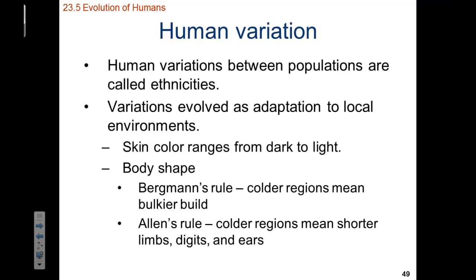Within Homo sapiens there is a lot of variation. These variations between populations are called ethnic groups or ethnicities, and these variations are adaptations to local environments — including changes in skin color and body structure. Bergmann's rule is a general trend observed within mammals: individuals that live in cold regions have bulkier builds to better conserve heat, while individuals in warmer regions have more slender builds to better cool their bodies. Allen's rule is another trend: organisms in cold regions have short limbs, digits, and ears, while those in warm regions have larger limbs, digits, and ears.